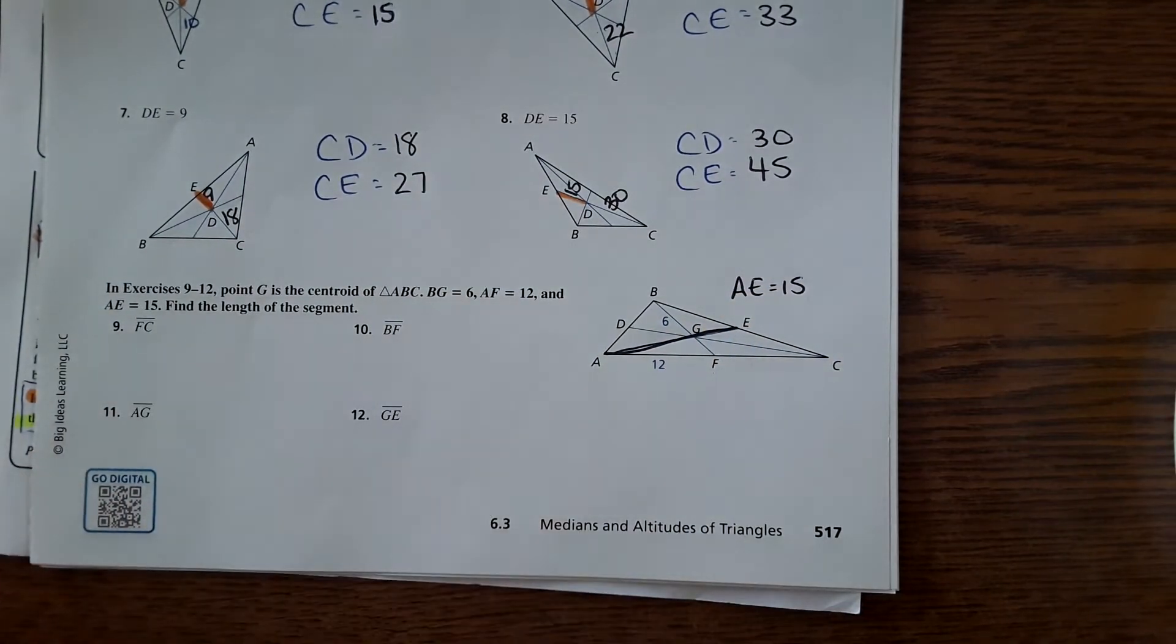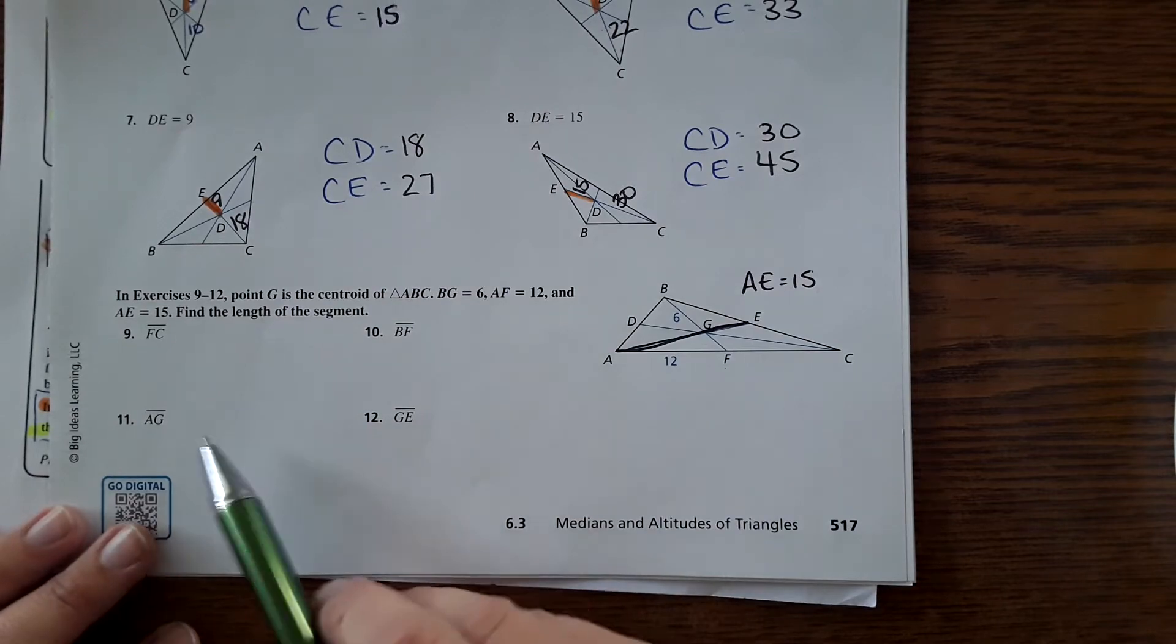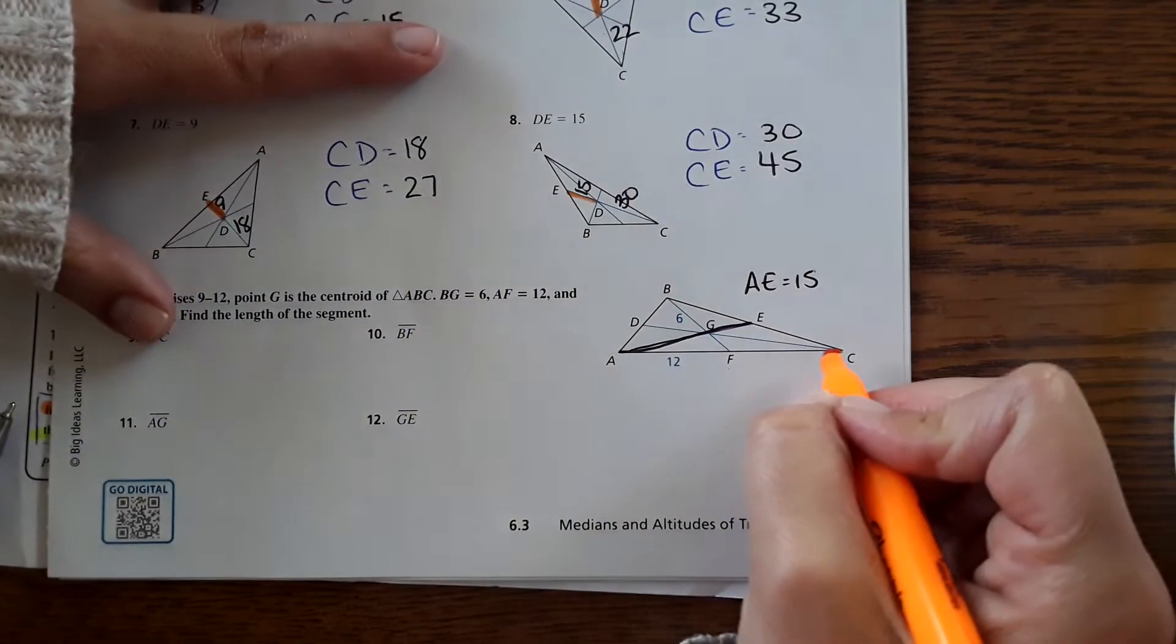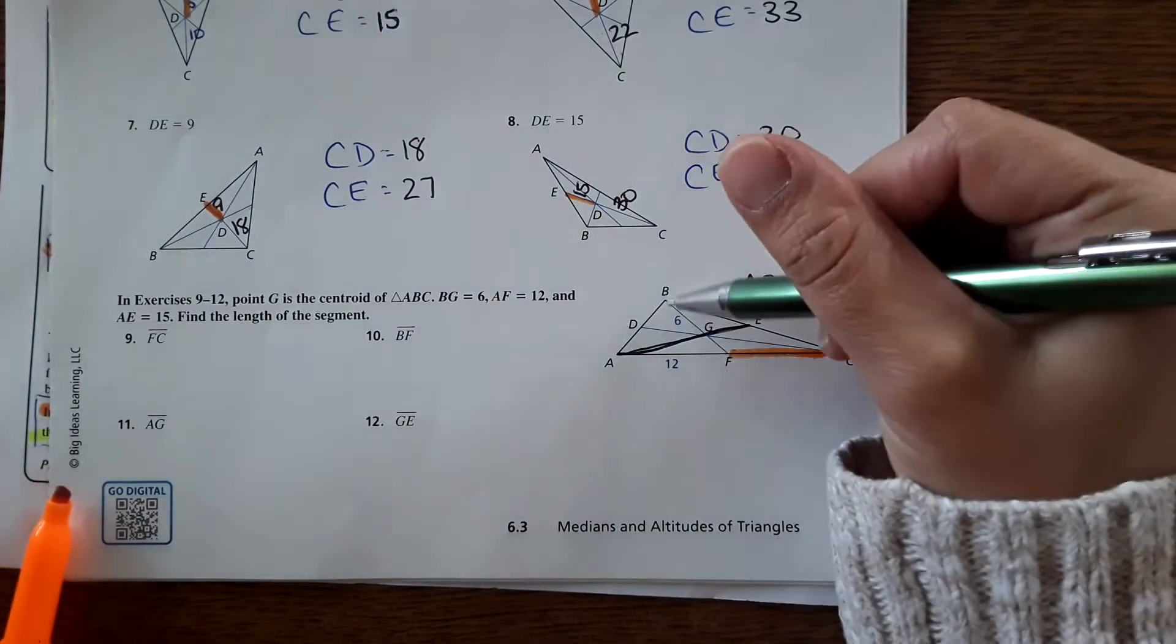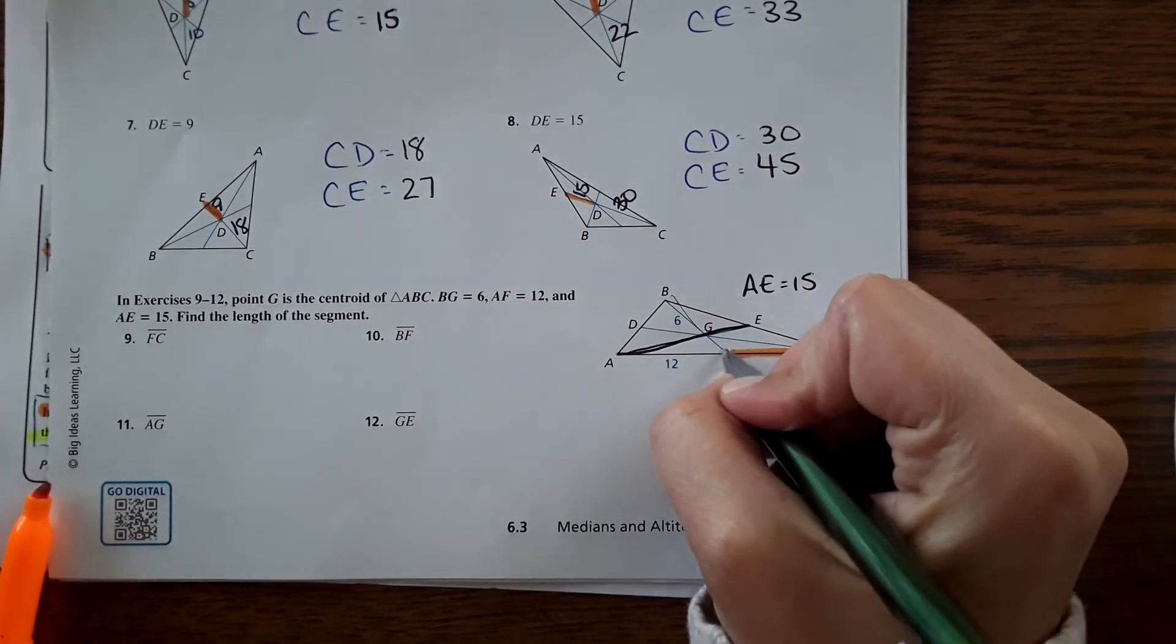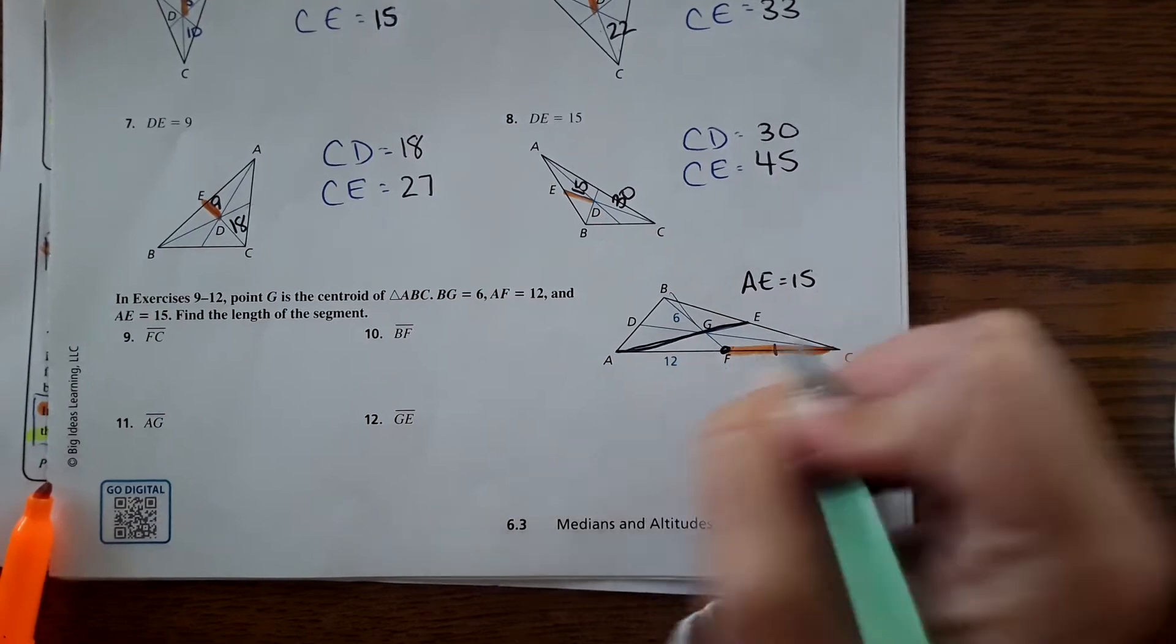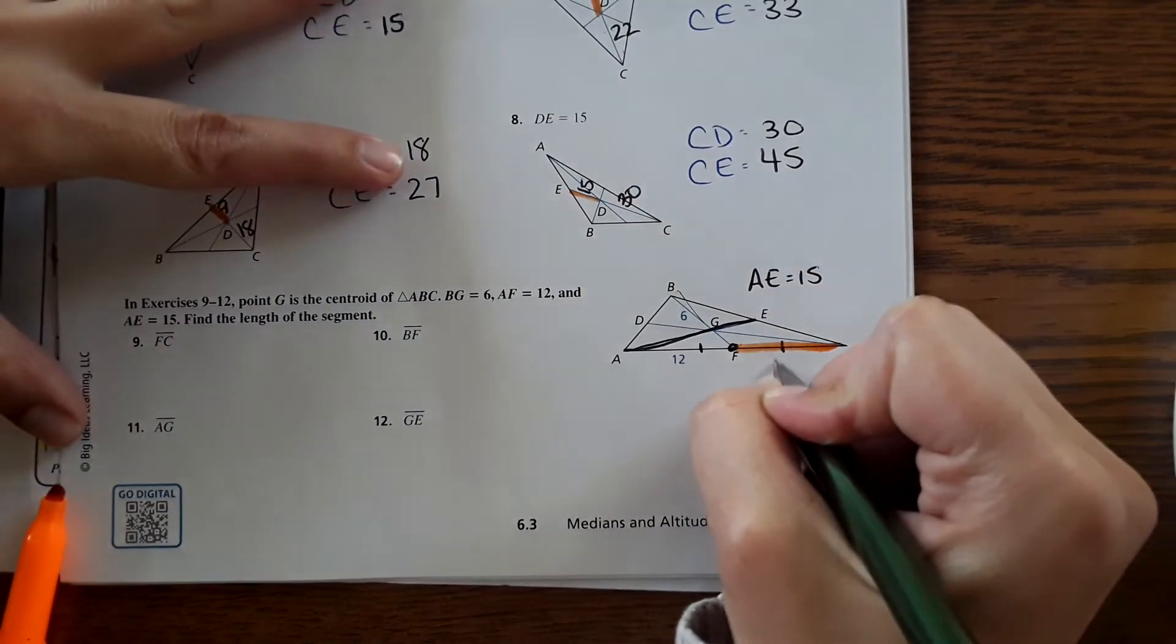And then we're going to find the length of the segments they asked for. It first asks for the length of FC, which is right here. Well, since these are medians, then this would be a midpoint, and this would be the same length as this side. So FC must be 12.